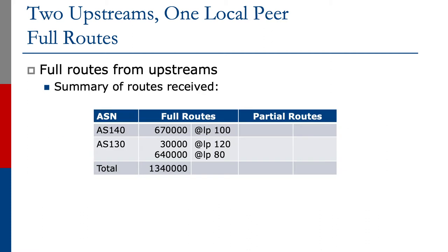Let's summarize this in a table, which will be useful when we look at the next example covering partial routes. At the time of recording, the full BGP table was about 650,000 prefixes — so 650,000 prefixes coming from AS140 tagged with local preference 100. From AS130, around 30,000 prefixes from AS130 and its immediate neighbors are tagged with local preference 120, and the remaining 620,000 are tagged with local preference 80, giving a grand total of 1.3 million paths received by the two routers.